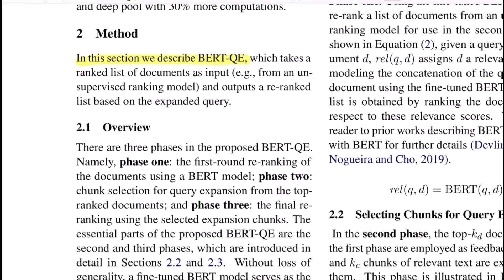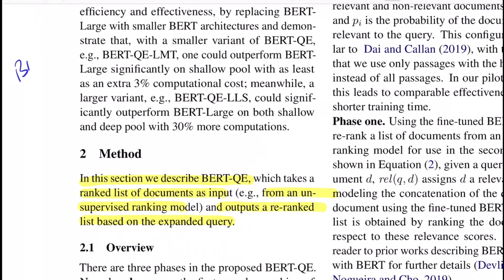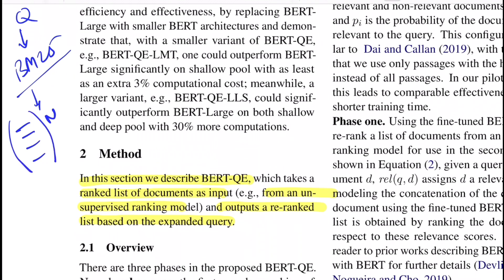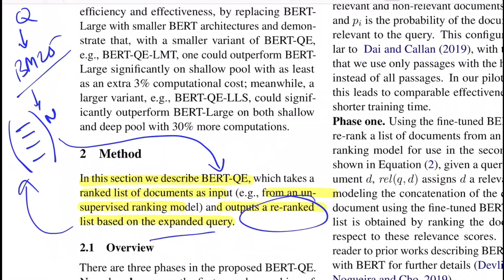BERT QE takes the ranked list of documents as input — for example from some unsupervised ranking model — and outputs a ranked list based on the expanded query. In this paper they essentially use BM25 as one of the base models, which calculates a score between every word and document. It's a retrieval function that returns a set of documents based on query terms appearing in every document — somewhat similar to TF-IDF but with a different calculation. The pipeline goes: given a query Q, BM25 searches the entire database and returns a list of N documents ranked by relevancy score. That list then goes to BERT QE where re-ranking is performed based on the expanded query.